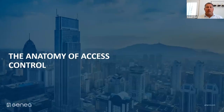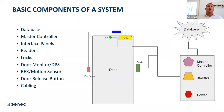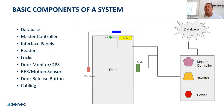Let's start with the anatomy of access control. Mike, maybe you can give a high-level overview of the basic components of access control - looking at doors, controllers, and interfaces. What are we seeing here?